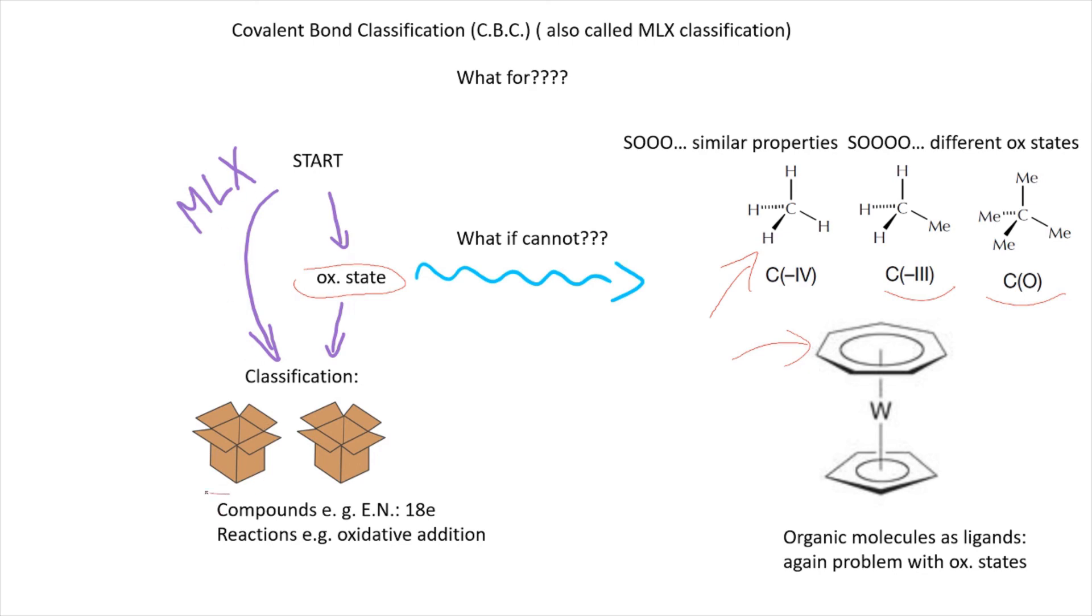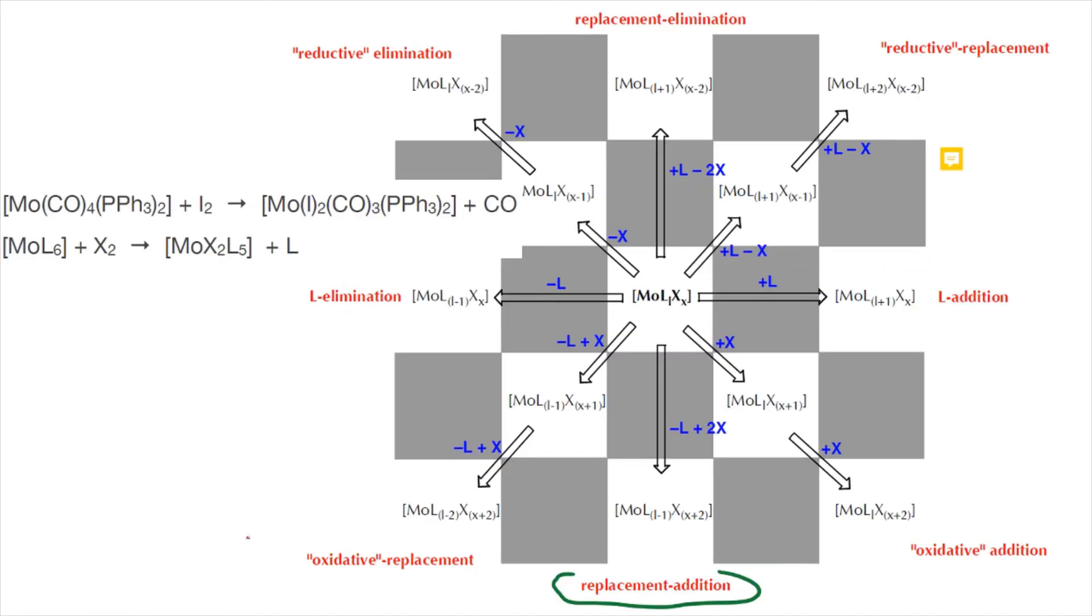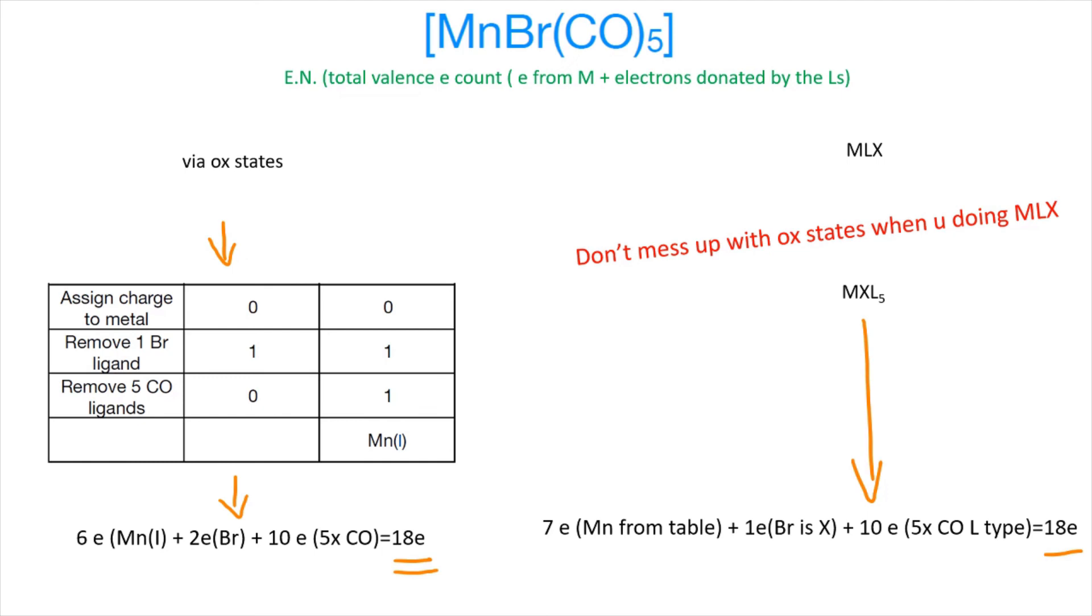You can classify the total number of electrons, En, and develop some rules. You can also classify reactions. For instance, if you don't know whether you performed oxidation or reduction because you can't assign oxidation state unambiguously, you will not be able to see any trends. With MLX classification you can do that. This is a chart which can show you what reactions you've been performing. In this reaction, we added 2X ligand and expelled an L ligand, giving us a replacement addition reaction. Providing that a reaction is elementary, made of one step, you will be able to find it on this chart. If it's a composite reaction made of many steps, most likely you will not be able to place it on this chart. The main message is don't mess up with oxidation states when you do MLX classification.